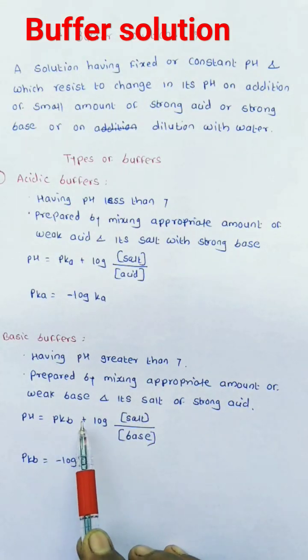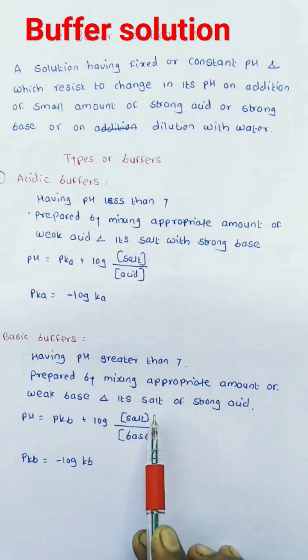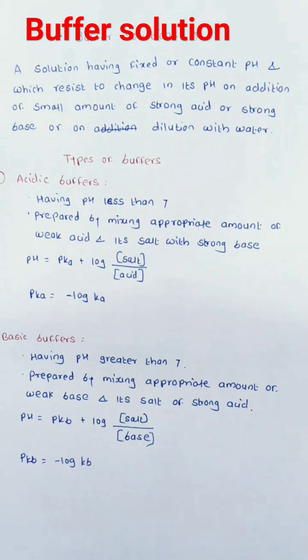For basic buffer, pH equals pKb plus log of concentration of salt divided by concentration of base, where pKb equals minus log Kb.